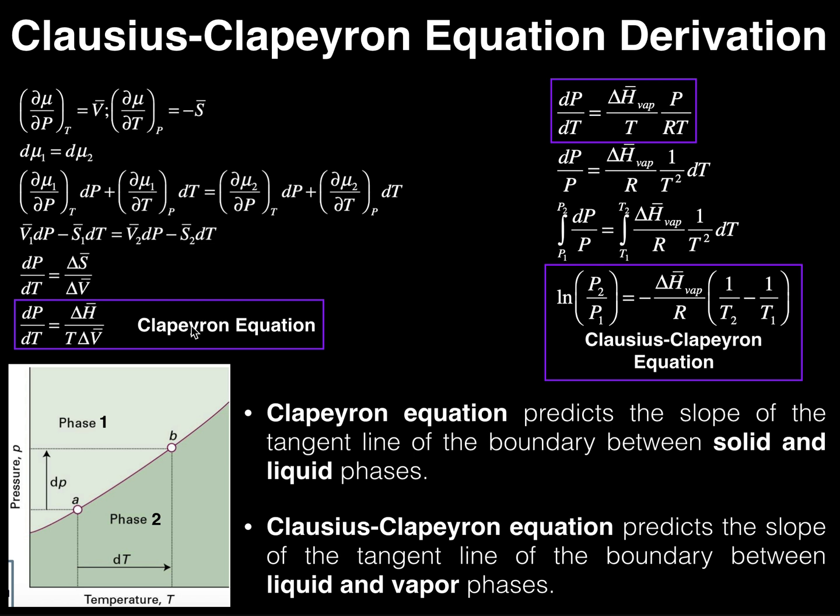But here's the thing I want to drive home about the Clapeyron equation. We're dealing with phase changes between solids and liquids. So if you were to melt ice, so ice is a solid, if you melt it into its liquid form, liquid water, the volume overall isn't going to change that much. There's going to be a difference in volume between the two phases, but it's not going to be huge.